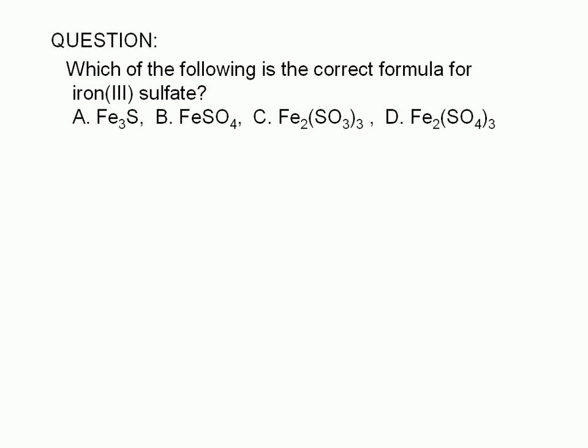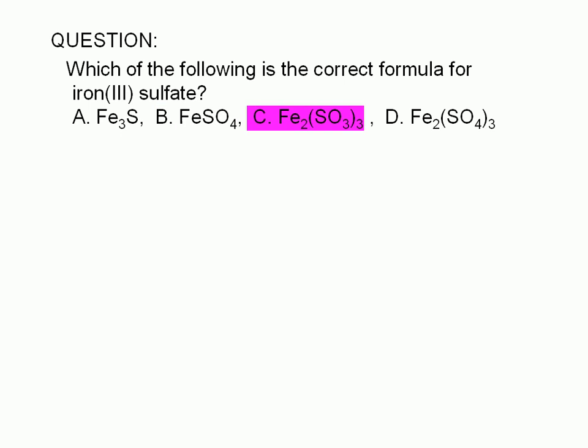Which of the following is the correct formula for iron 3 sulfate? A. Fe3S, B. FeSO4, C. Fe2(SO3)3, or D. Fe2(SO4)3.